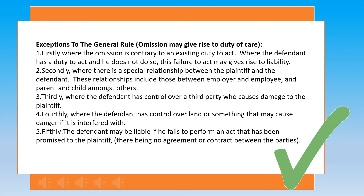The exceptions to the general rule. Firstly, where the omission is contrary to an existing duty to act — where the defendant has a duty to act and does not do so, this failure to act may give rise to liability. For example, a driver who does not brake his car at the traffic lights when the lights are red has clearly omitted to act, which omission may give rise to liability for any damage caused.